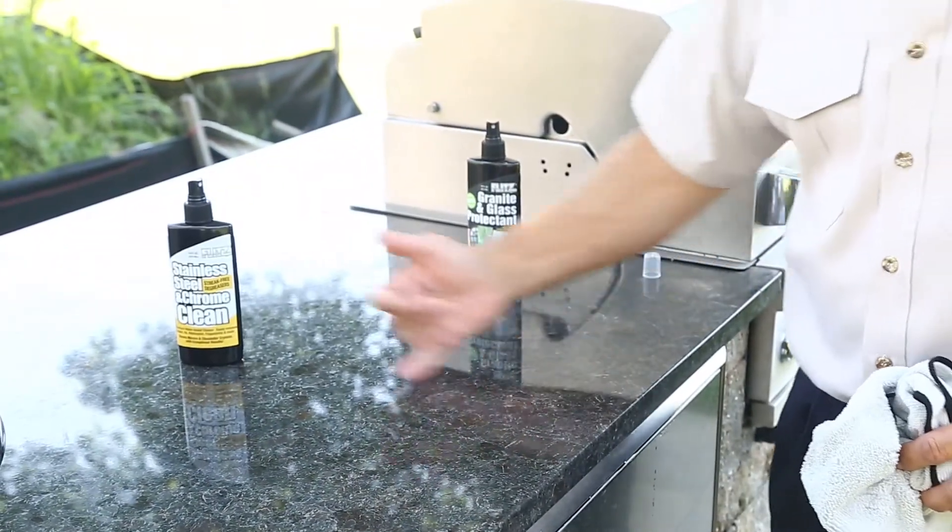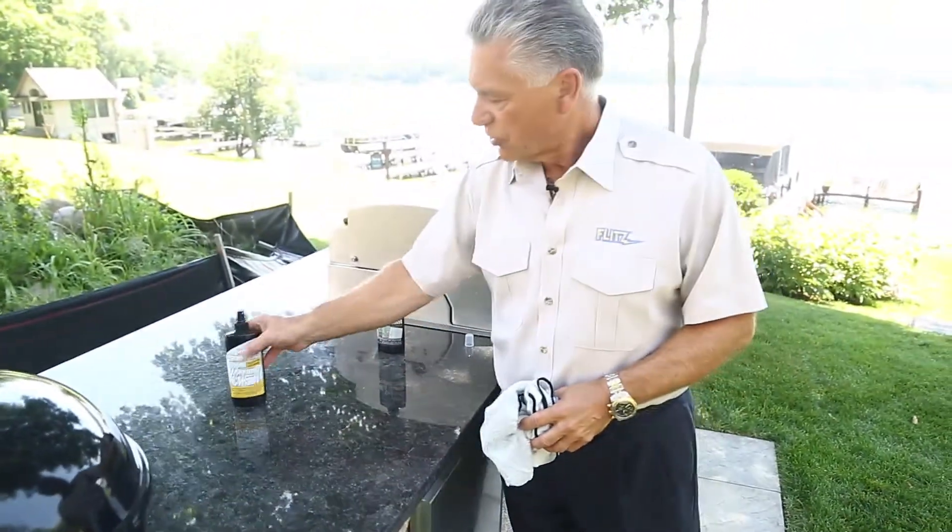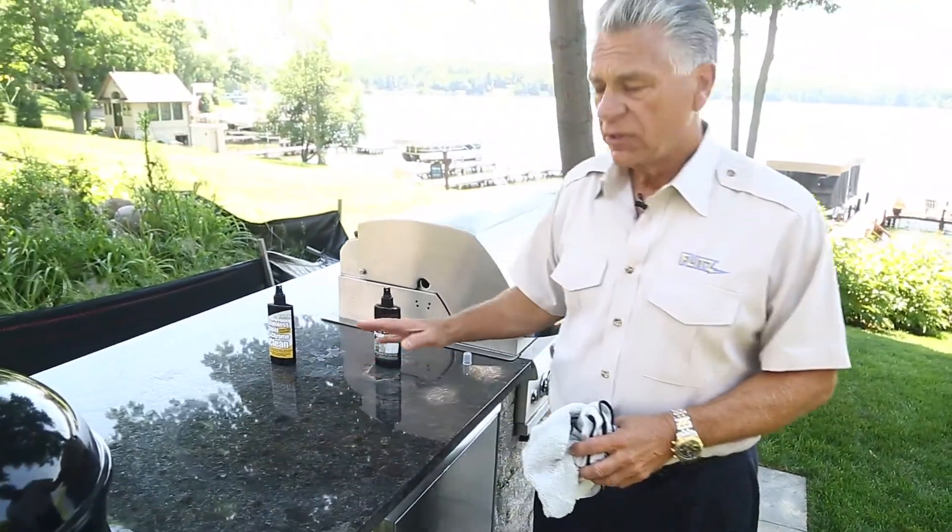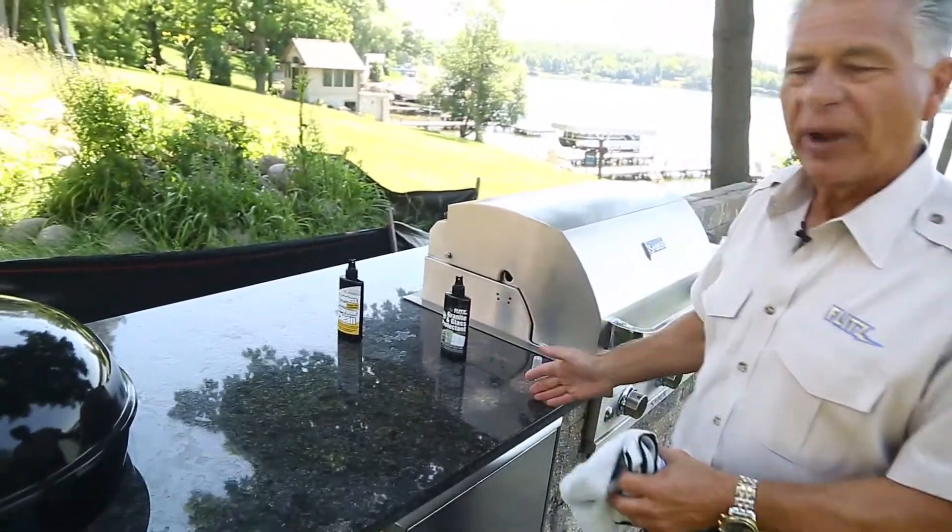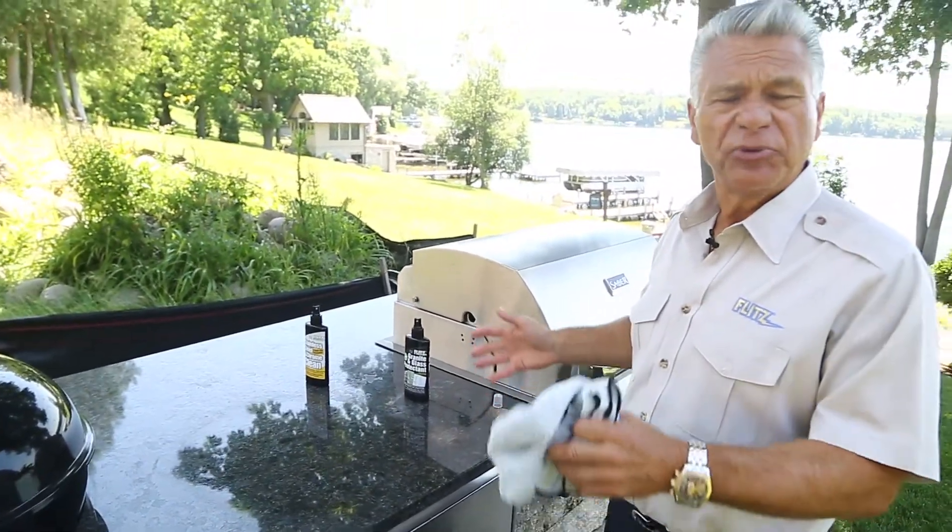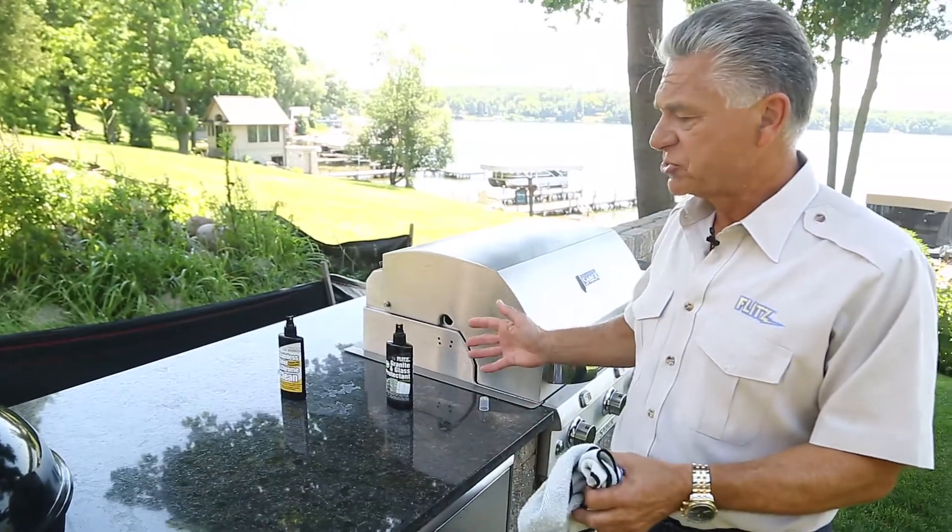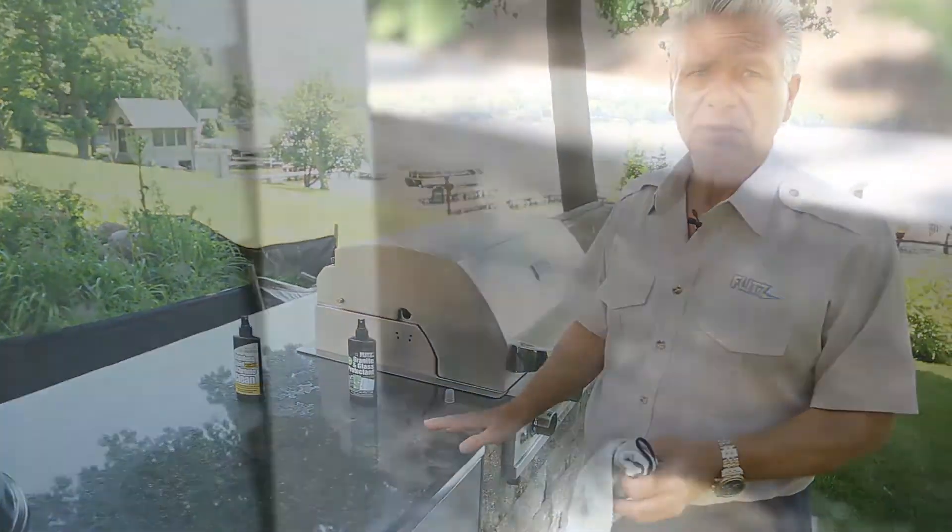So again, when you put this on, this sealant is good for three to four months in your kitchen, your patio. And it doesn't have to be granite. This can be Corian. This can be Formica. Any kind of man-made materials works phenomenal on. Now for your glass,